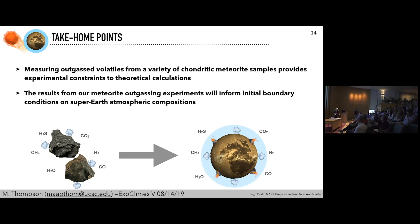People have definitely heated up meteorites before, but no one has done it in such a way with this specific goal in mind. A lot of the older meteorite heating experiments are trying to understand what happens when meteorites enter the Earth's atmosphere, so they're looking at flash heating — really rapid heating events. What we're trying to do is create an experimental environment that really replicates the outgassing process, as opposed to the cosmochemistry perspective of trying to understand the specific process meteorites went through to get to Earth. We are definitely not the first people to heat meteorites, but this context is different.